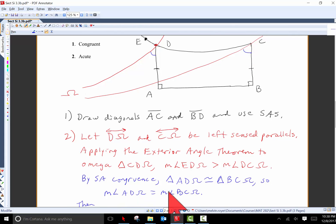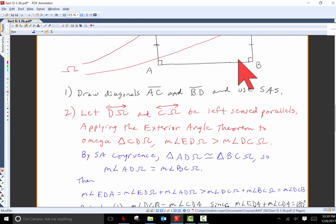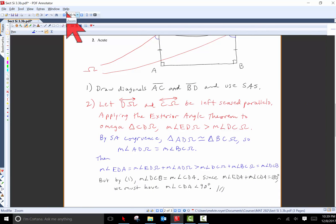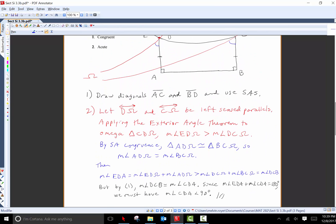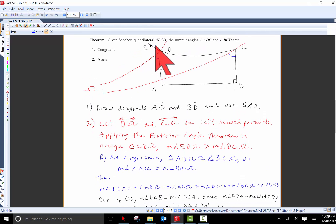But by side angle congruence in triangle AD omega and triangle BC omega, both of those omega triangles, have right angles and then congruent legs here and so those two triangles are congruent and so angle AD omega and angle BC omega marked in blue are congruent. So they have equal measure.